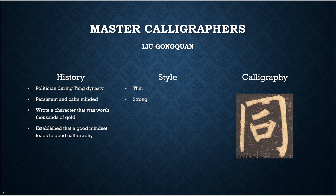Next, we have Liu Gongquan. He was also a politician during the Tang dynasty. He was very persistent and calm-minded. He was well-known for having a single calligraphy character that ended up being sold for thousands of pieces of gold. He also established that having a good mindset and mental state led to much better calligraphy pieces. His style was known to be thin, yet also a very strong style of calligraphy.